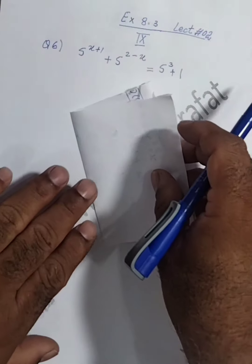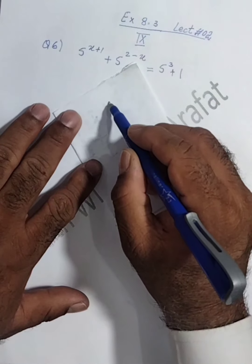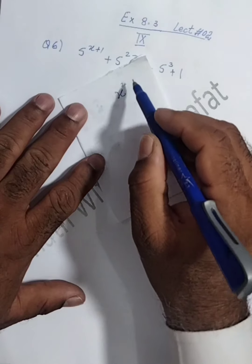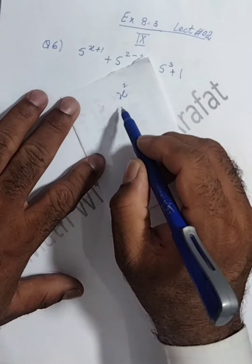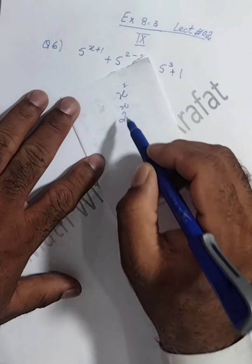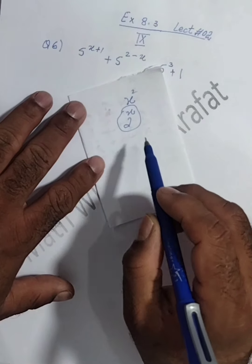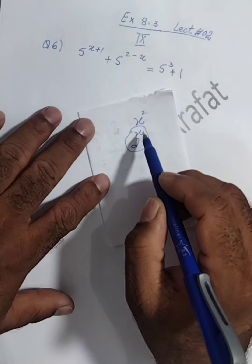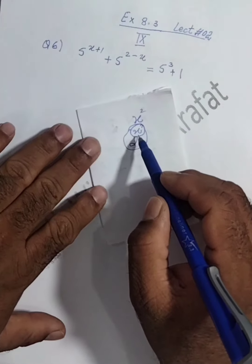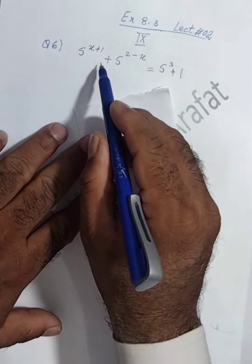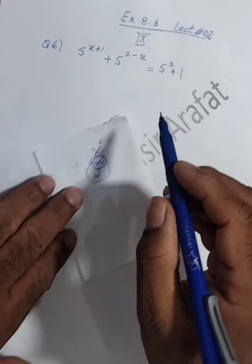First we have to discuss what are exponential type equations. If we have x power 2, the power is in constant form with a variable base. But if we write 2 power x, then it becomes an exponential type function — the power is in variable form. So if a power is in the form of a variable, that is called an exponential equation.